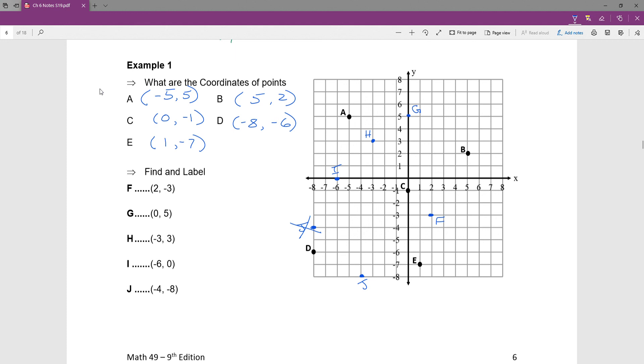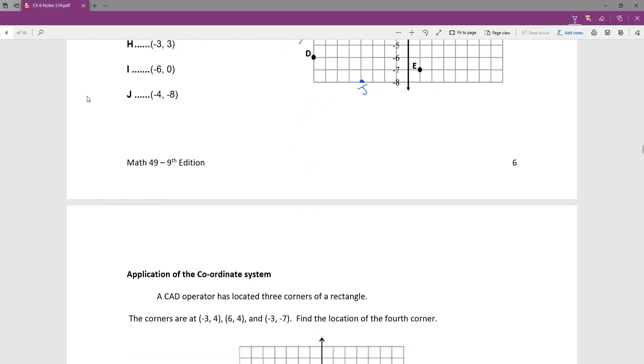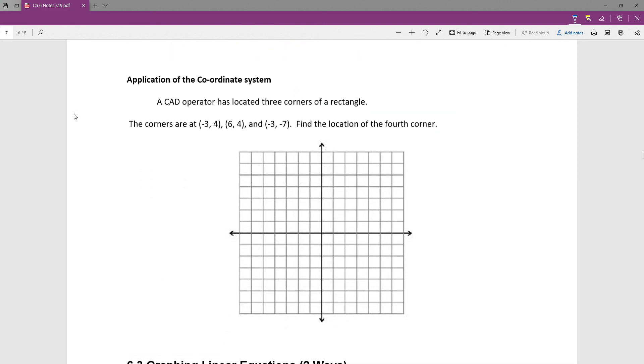All right, that looks a little better to me. All right, so one more of these in the application of this, a bit of a stretch, but this one says you're an AutoCAD or a CAD operator and you've got three of the corners of a rectangle. And so we've got these locations and pictorially, graphically, we want to figure out the location of the fourth corner. So what we're going to do is start by graphing these.